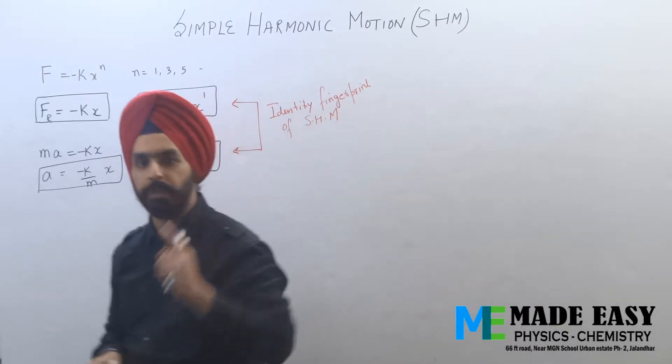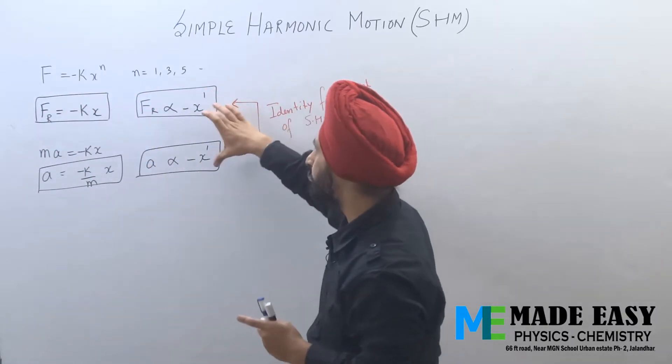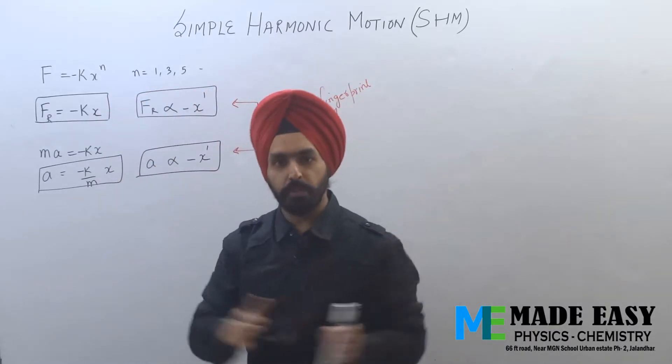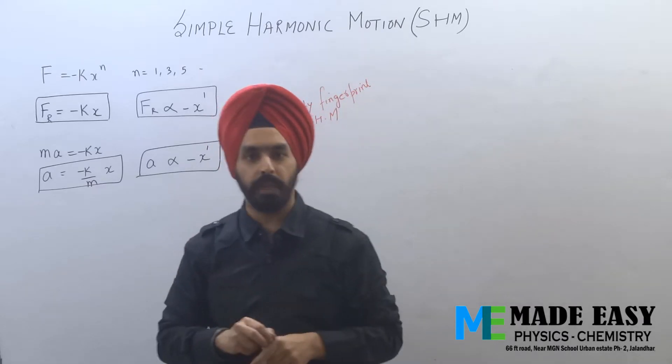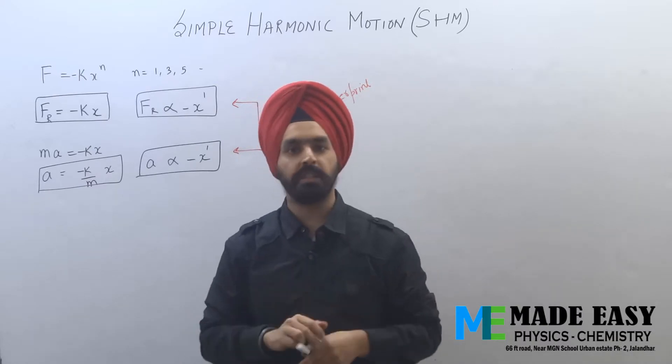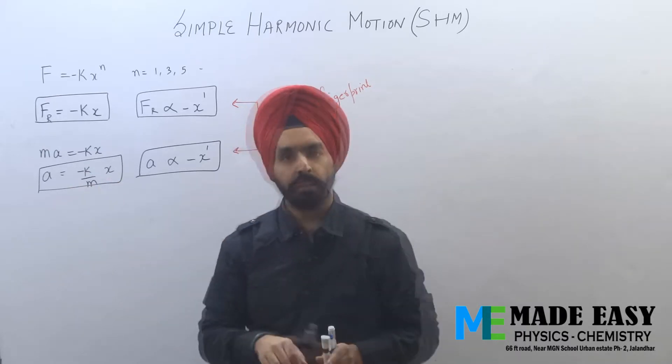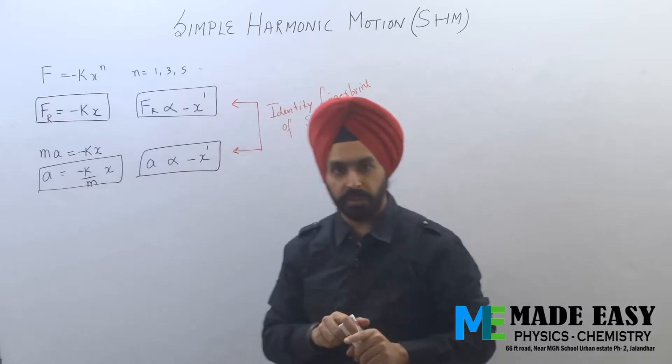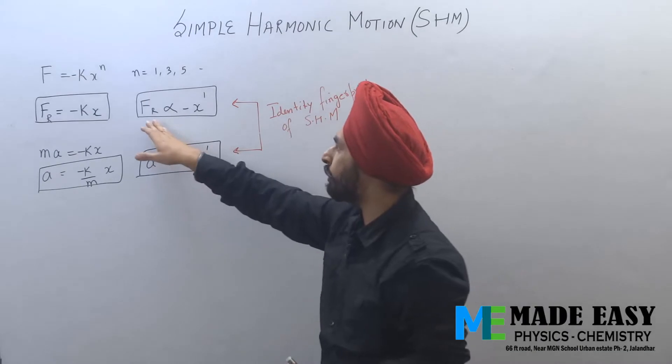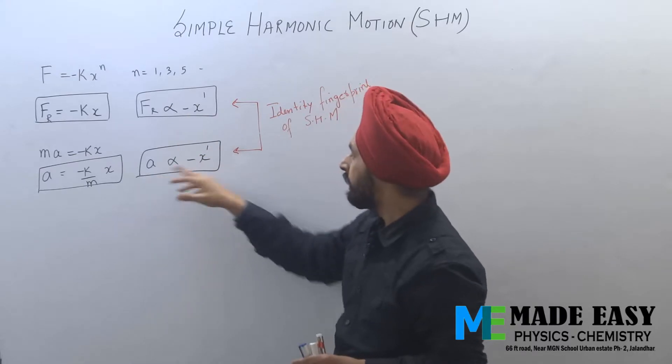This is the identity, the fingerprint of SHM. If any motion is given to you and you're asked to identify whether that oscillatory motion is simple harmonic or not, you can check by seeing if the motion is back and forth about a fixed point. That guarantees it's oscillatory motion, but whether that particular oscillatory motion is SHM or not, the identity is whether the restoring force is directly proportional to displacement power one.